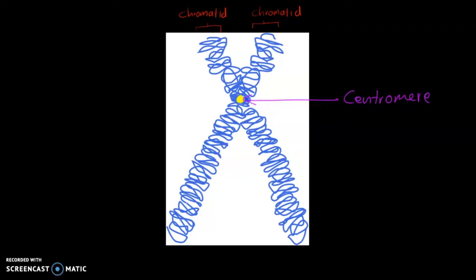Well, this part of the chromosome plays essential roles in equal chromosome segregation during cell division. It's responsible for the movement of the replicated chromosomes. That is, these two chromatids into the two daughter cells during mitosis and meiosis.